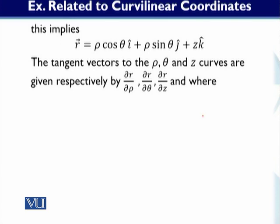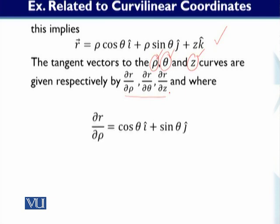We have to define the tangent vectors with respect to rho, theta, and z — so three tangent vectors. These are: partial R over partial rho, partial R over partial theta, and partial R over partial z. These are simple derivatives. Taking the derivative with respect to rho: partial R over partial rho = cos(theta) i + sin(theta) j.